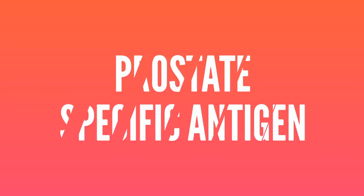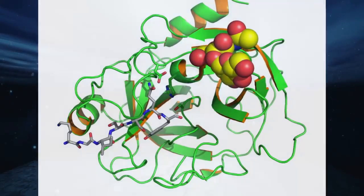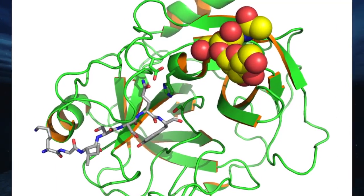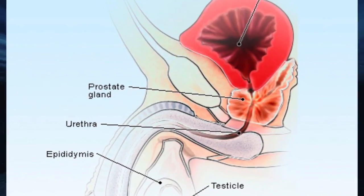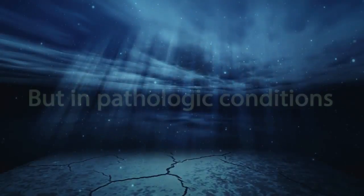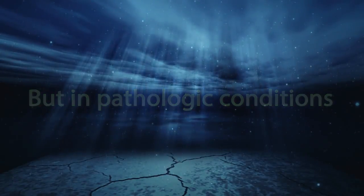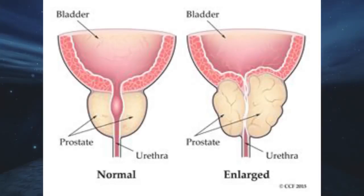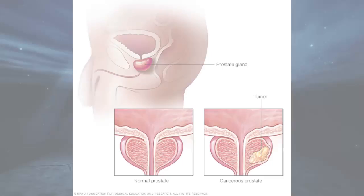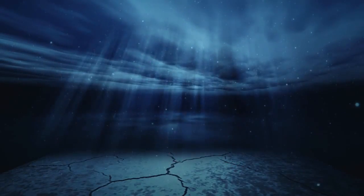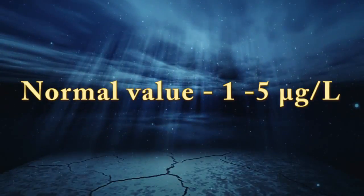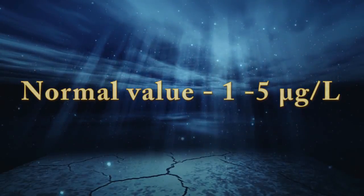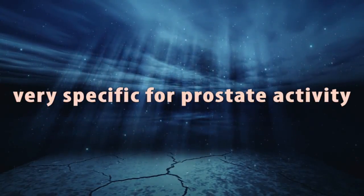Prostate-Specific Antigen (PSA) is a protein almost exclusively produced from the secretory epithelium of the prostate gland in normal conditions. In pathologic conditions such as urinary retention, enlargement of the prostate, and prostate cancer, there is increased secretion of PSA, which is normally secreted into seminal fluid. The normal value is 1 to 5 micrograms per liter, and it is very specific for prostate activity.